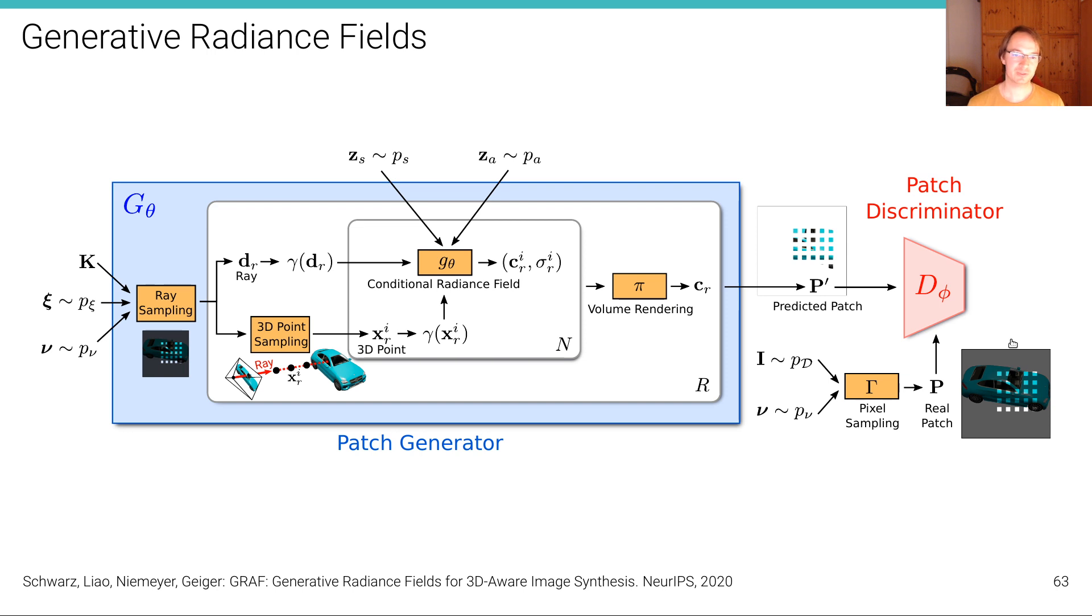But what we also wondered is, is it possible to take these implicit models—this is a particular type of implicit model called a radiance field here—and learn these models from unstructured image collection, where we have just a single image per scene and where we don't know the camera parameters, we don't know the camera pose or the intrinsics?